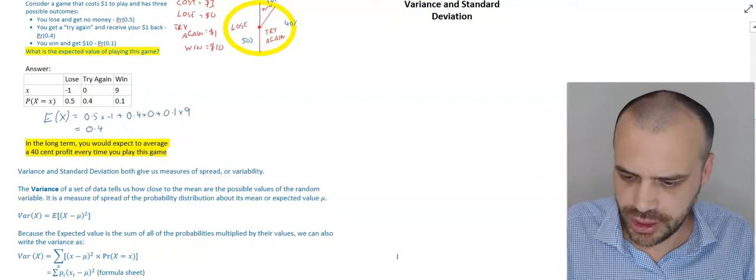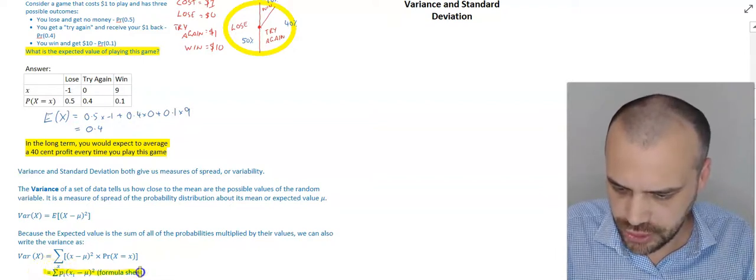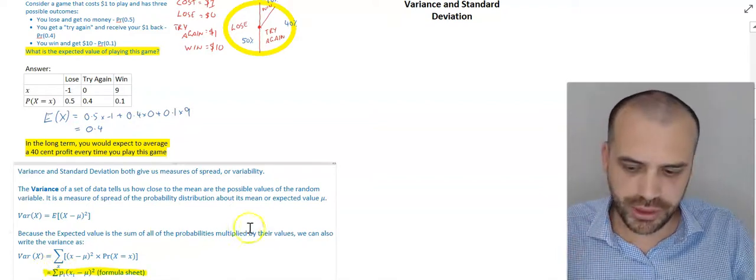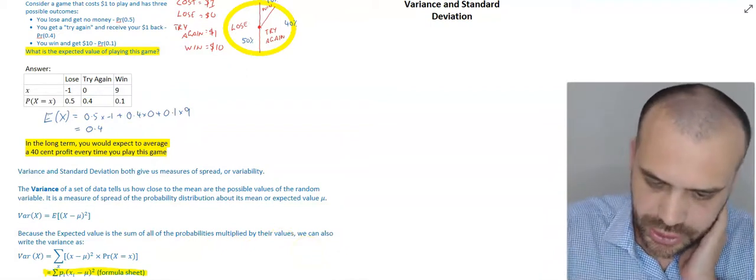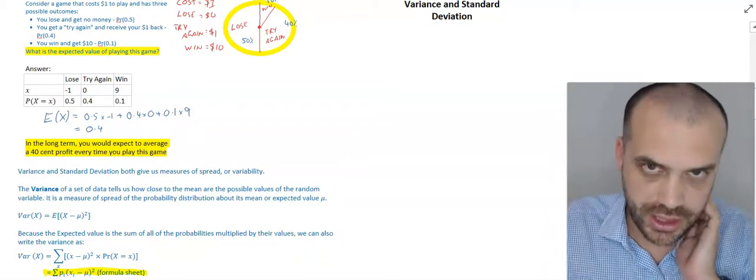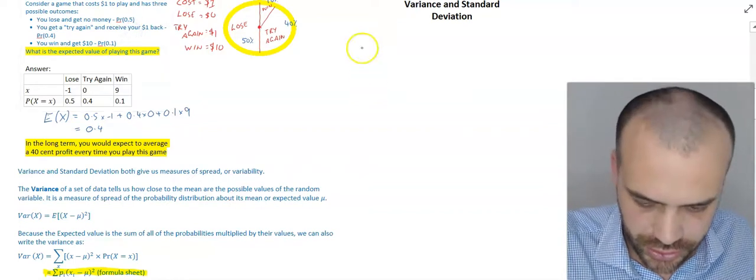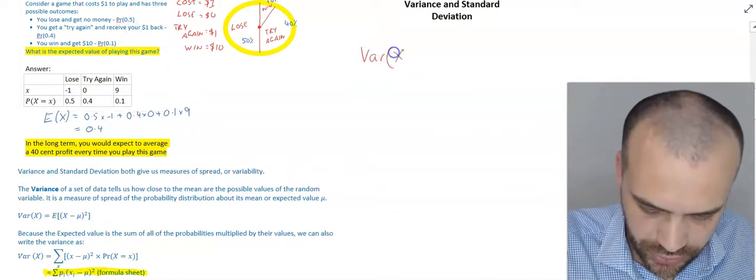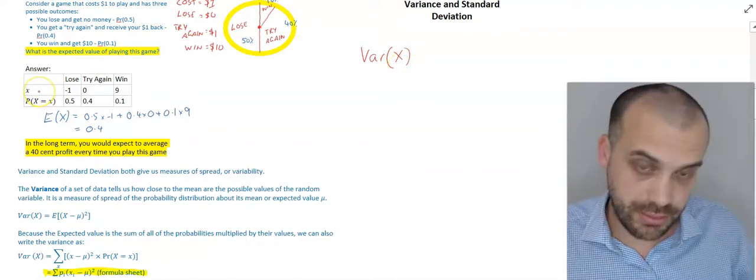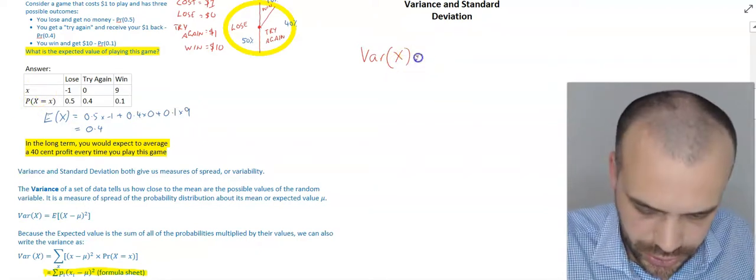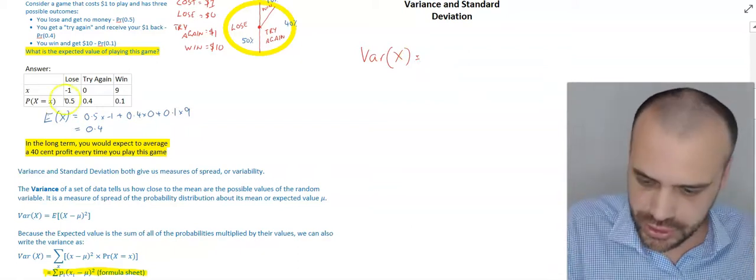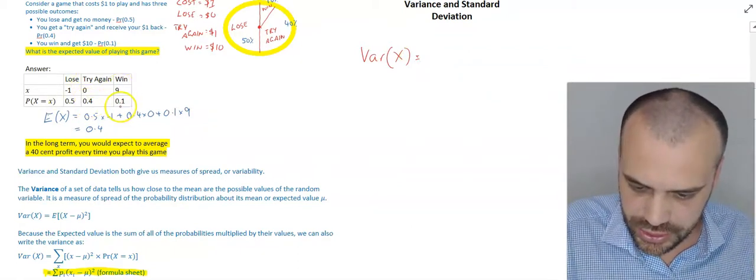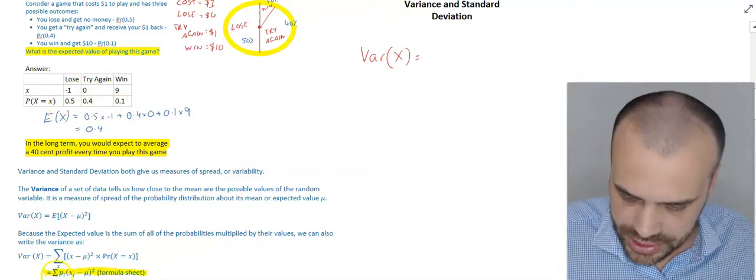Probably the most interesting one is this formula that you would find on your formula sheet. So, you might find it difficult to interpret. So, I'm going to just do an example and interpret it as we go. So, the variance of this game is equal to the sum of. So, we're going to do a few things. We're going to do something to this, do something to this, and do something to this. That's what that sigma means.